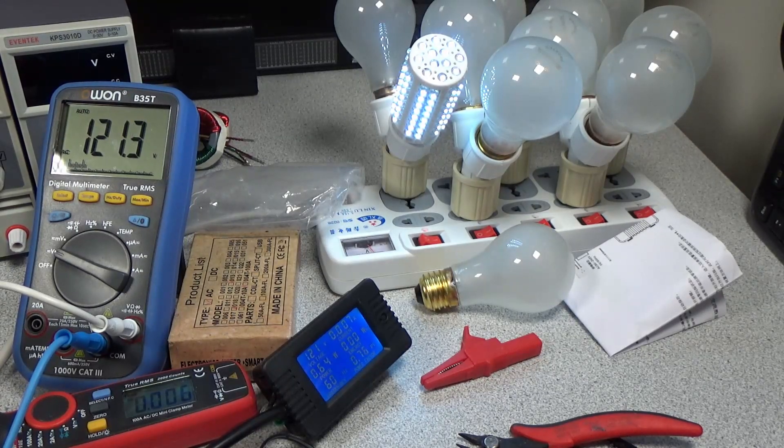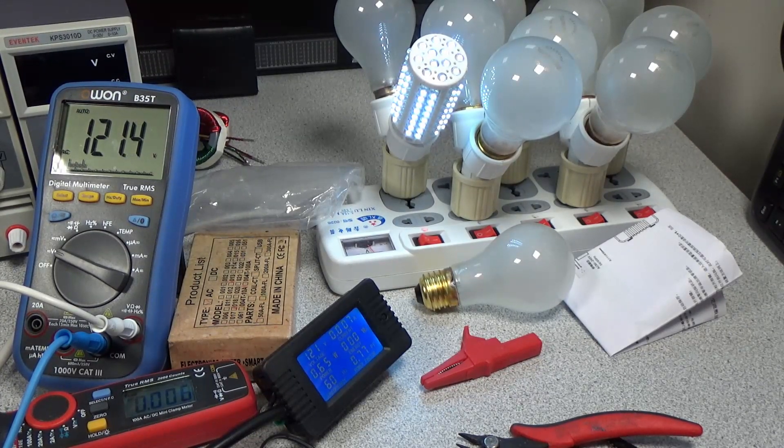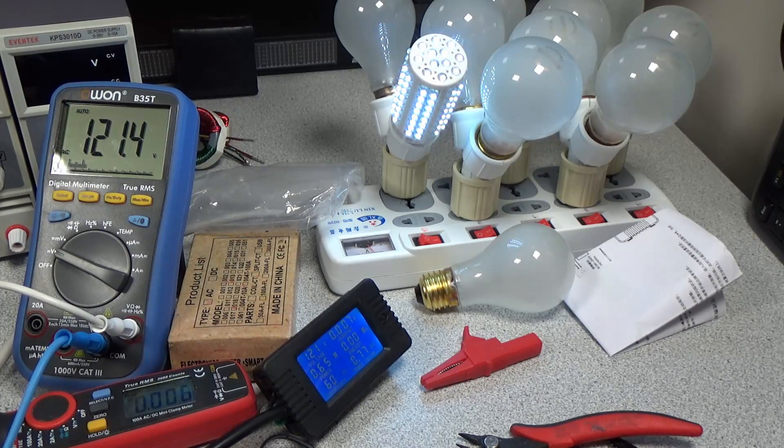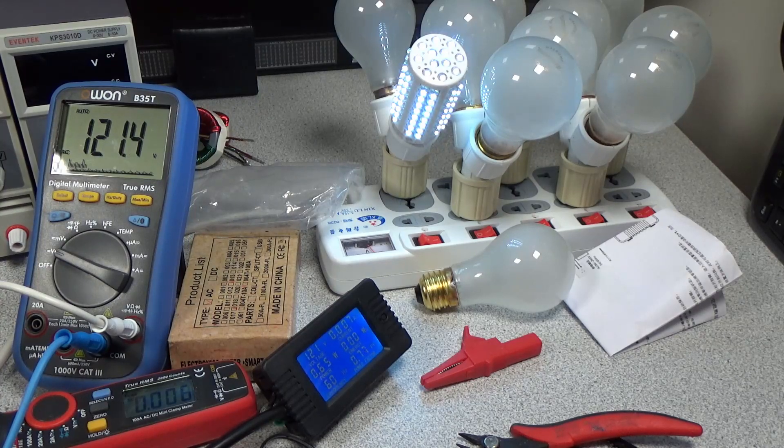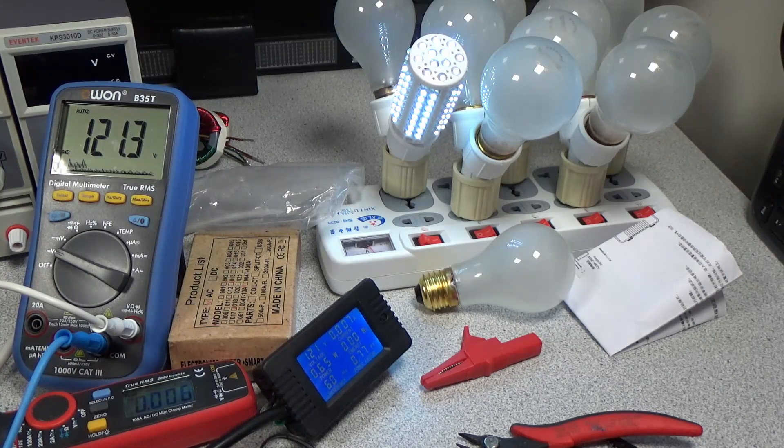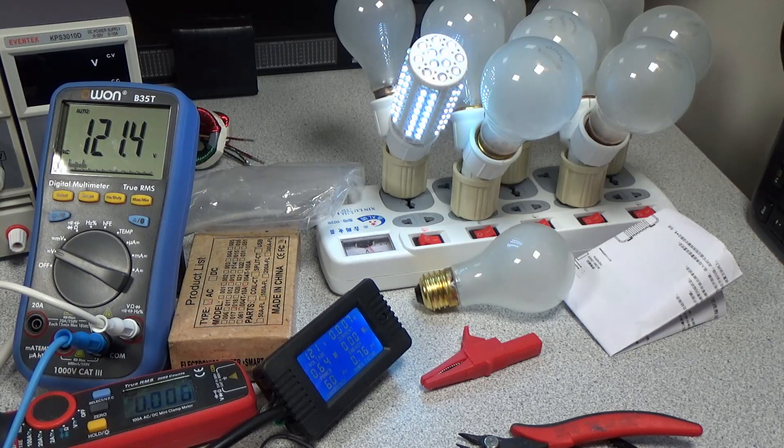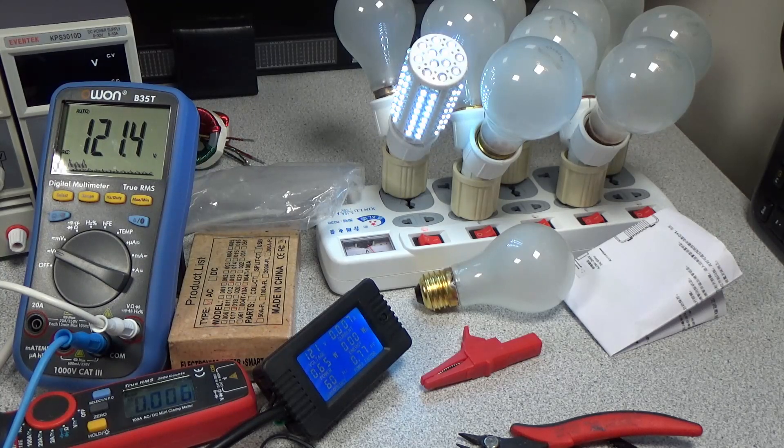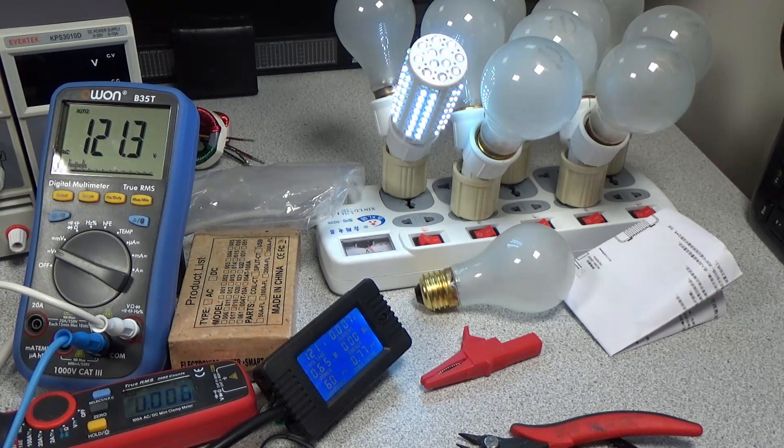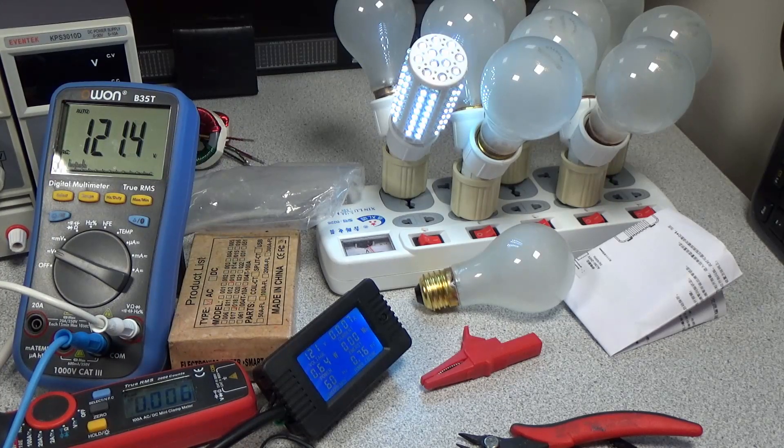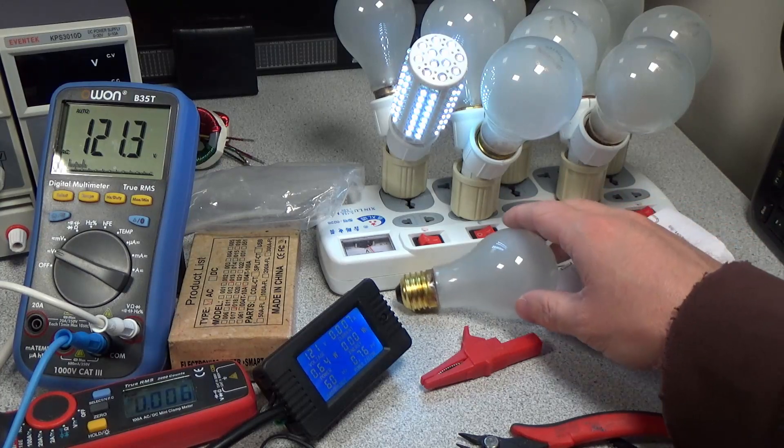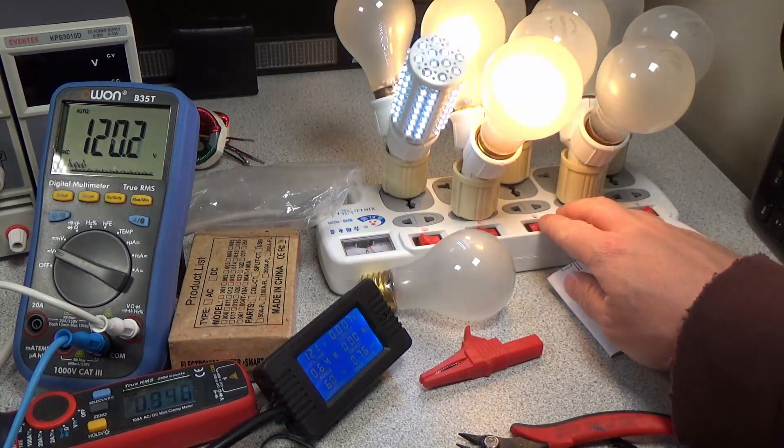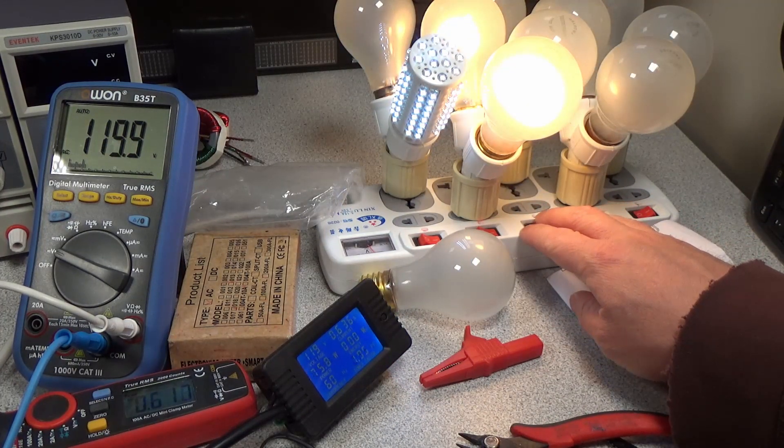Let's take a look at that light bulb. Alright, so now the currents are actually lining up very good. We got 0.006, 0.007. That's really good.